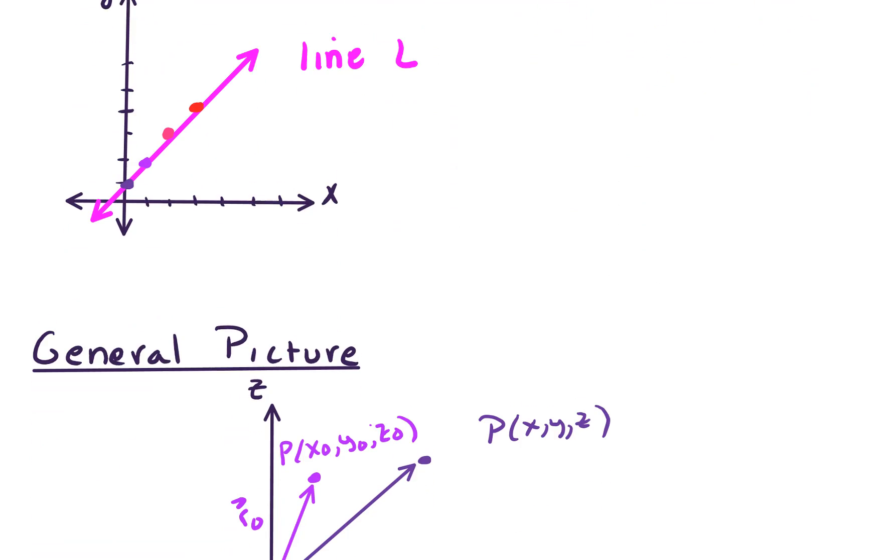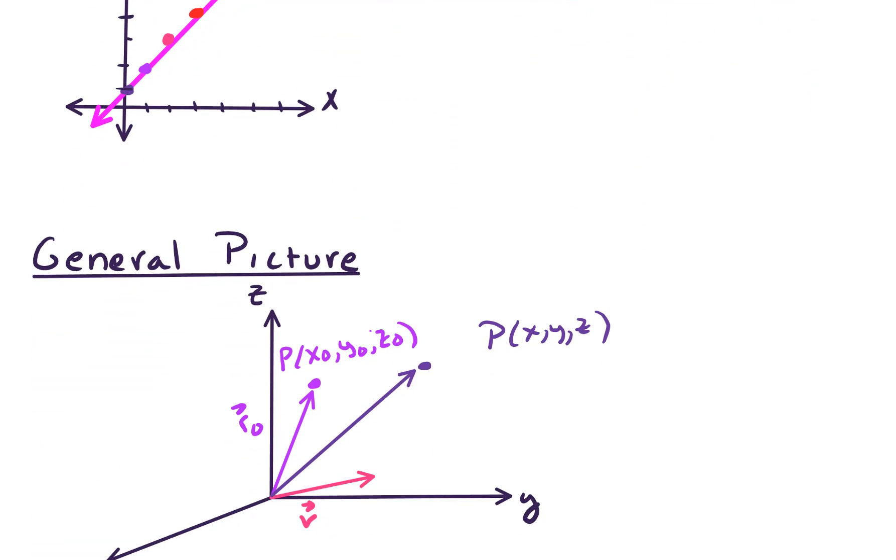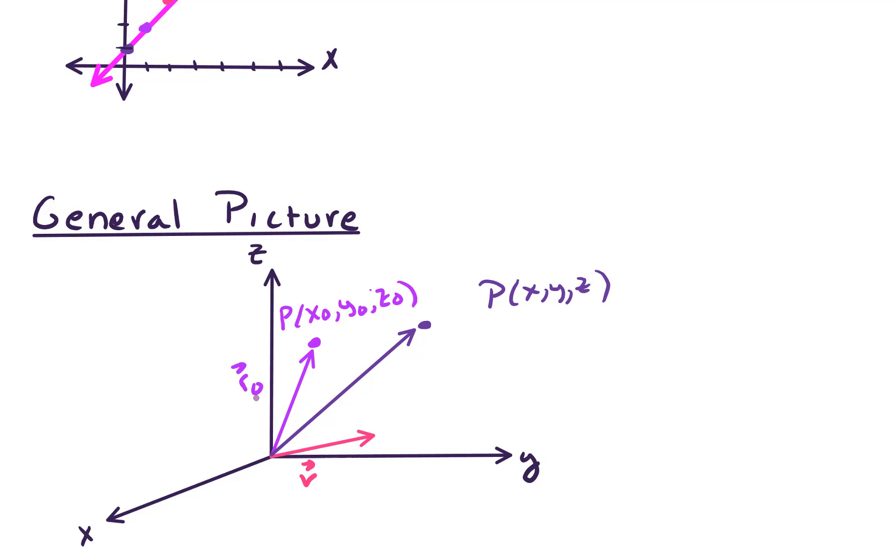So a general picture of what's happening here is that we start with R-naught. So we start with R-naught, and we are given a vector V. We're interested in the line that passes through the tip, the terminal point of R-naught, and which is parallel to V. And we know what that line will look like. I'll label that line L.